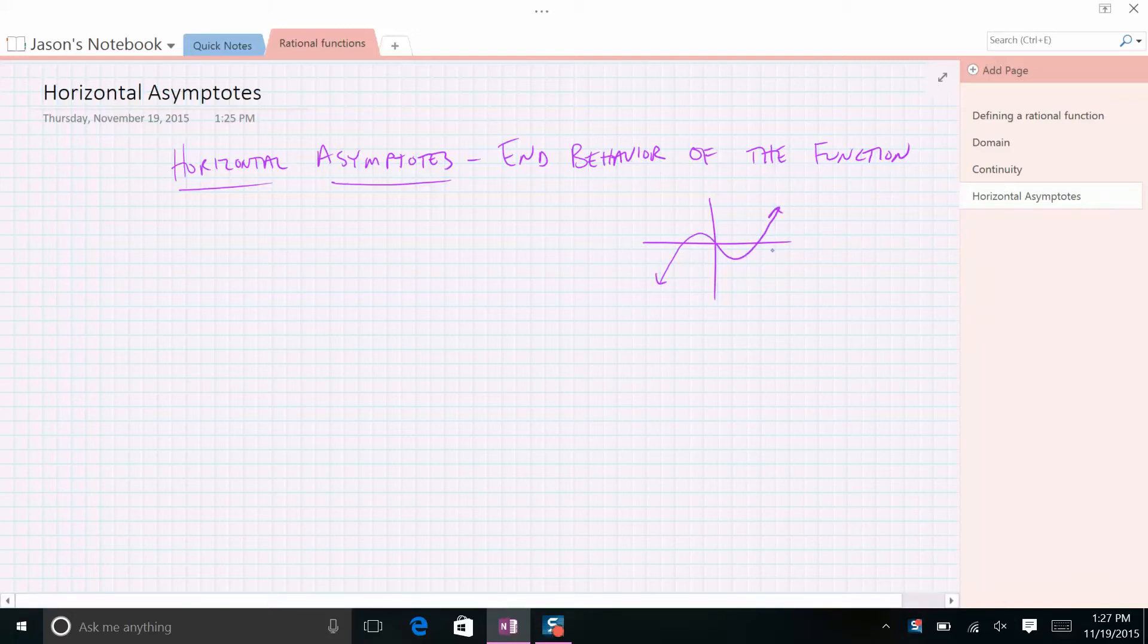So for this one here, I would say this is a polynomial. The limit as x approaches infinity of f(x), if I say this is f(x), equals infinity. That means on the right side it goes up, right? And then on the left side, the limit as x approaches negative infinity of f(x) goes to negative infinity.